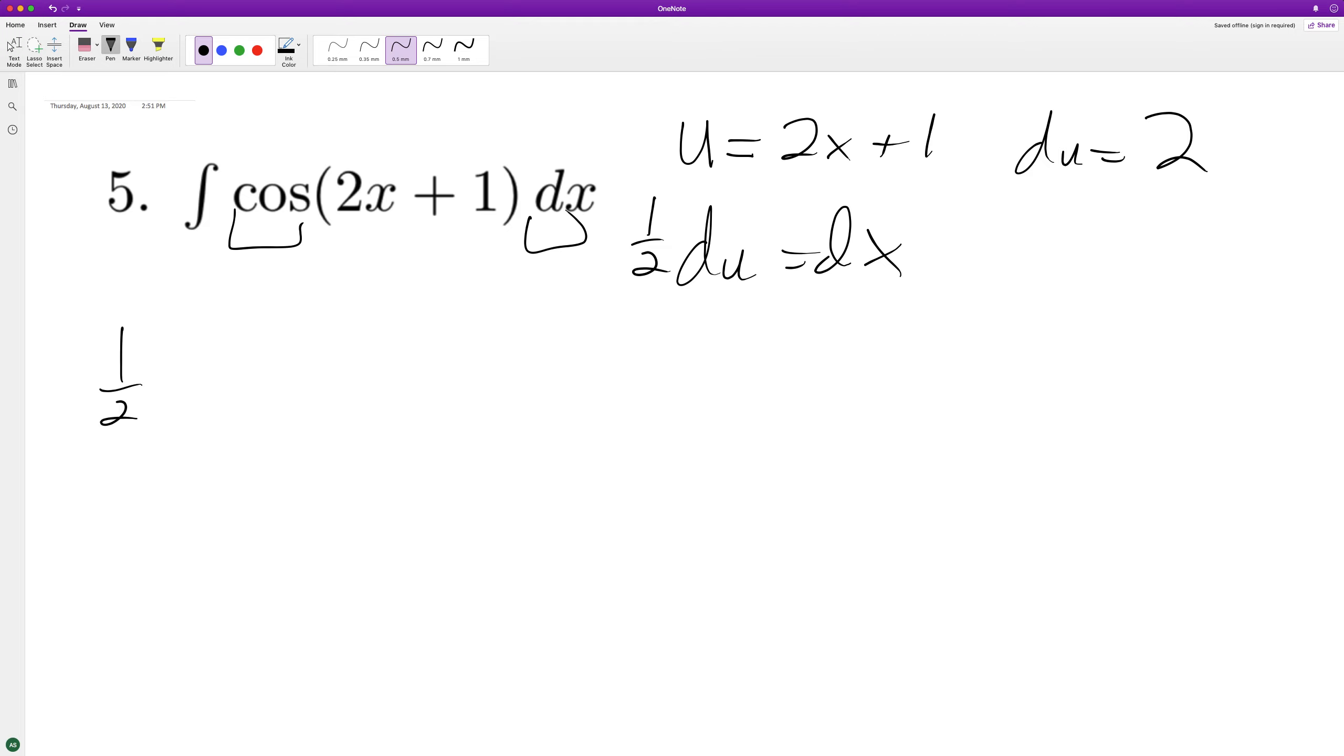So we have 1/2 integral of cosine of u. The integral of cosine is sine. So we have 1/2 sine of u plus c.